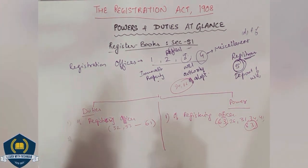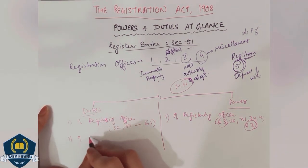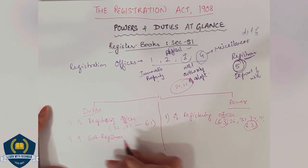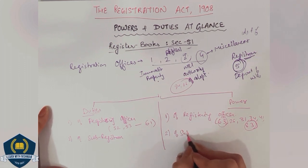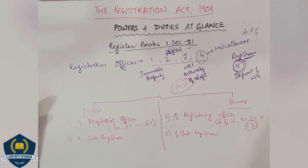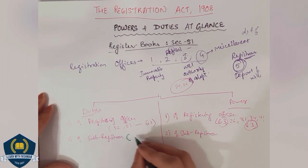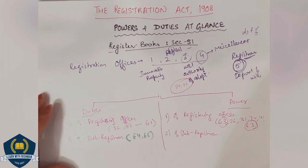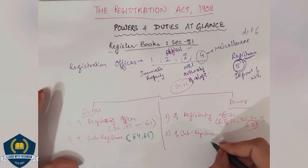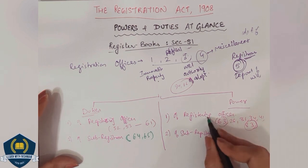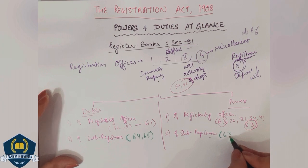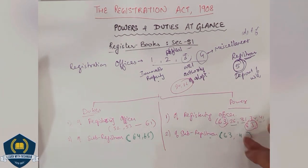Then the second division: duties of subregistrar — and powers of subregistrar. For duties of subregistrar, sections 64 and 65 will apply. For powers of subregistrar, section 63 applies for both registering officer and subregistrar. Then again sections 26, 31, 34, 41, 83 — same sections remain. So for subregistrar also, we will mainly study sections 63 and 83.